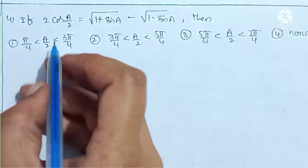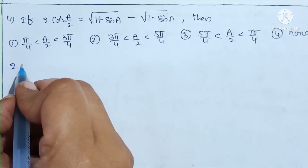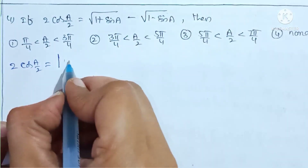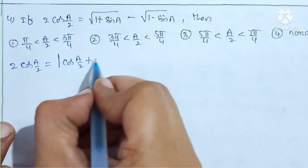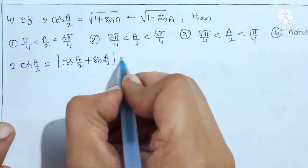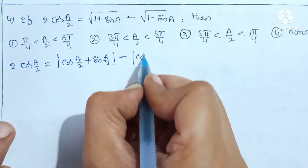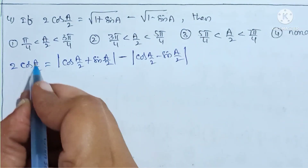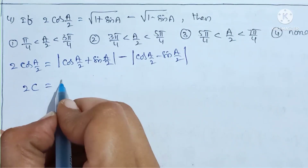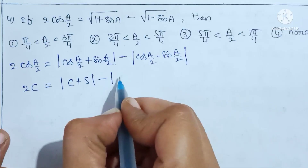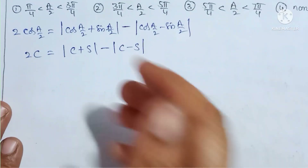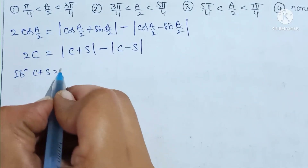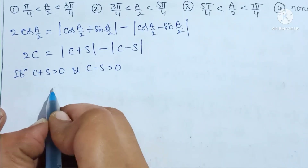Next sum: let c = cos(a/2) and s = sin(a/2). The expression is 2cos(a/2) = modulus of (√(1 + sin a)) evaluated as |c + s| minus |c - s|. We need to analyze conditions for the signs of (c + s) and (c - s).